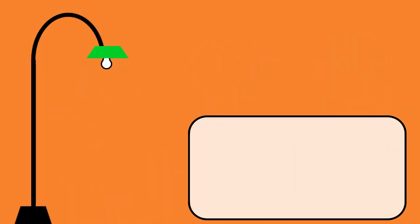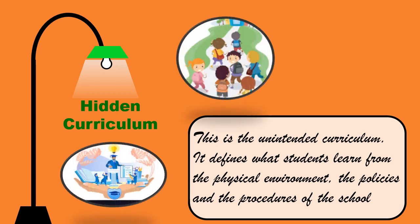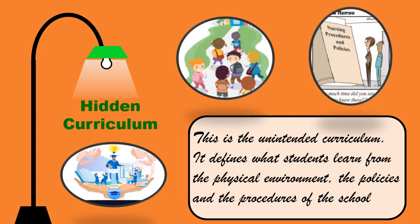7. Hidden Curriculum. This is the unintended curriculum. It defines what students learn from the physical environment, the policies, and the procedures of the school. Here is an example: each week, teachers in an elementary school devote 250 minutes to reading and 50 minutes to art. Students learn this lesson — in this school, art is not considered very important.